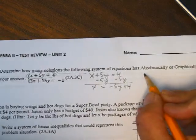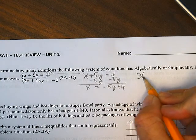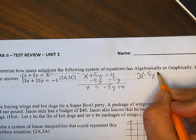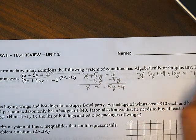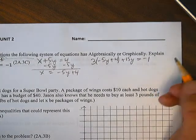I'm then going to substitute that back into my second equation. So I will have 3 times negative 5y plus 4 plus 15y equals negative 1.